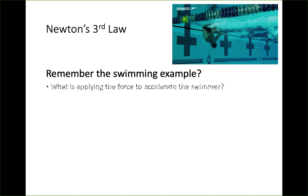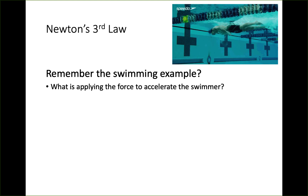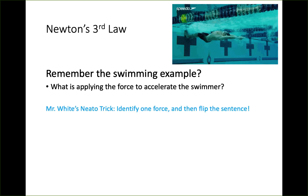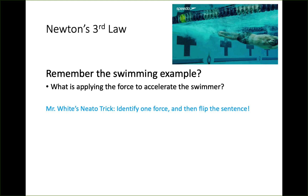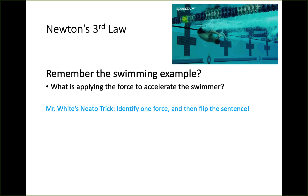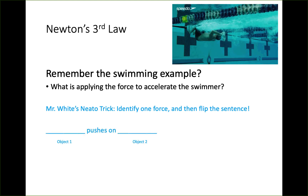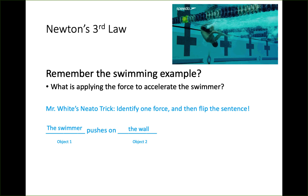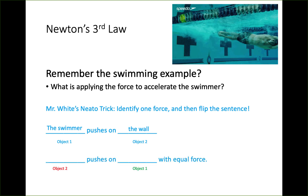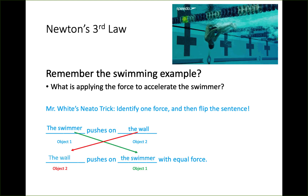Looking at our swimming example again — what is applying the force to accelerate the swimmer? Here's a trick: if you can identify the objects and a force from one of them, it's easy to figure out the other force. Object one is the swimmer, and the swimmer is pushing on object two, the wall. Now just flip those two objects in the sentence: the wall pushes on the swimmer with equal force.